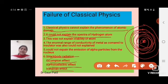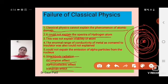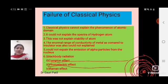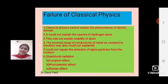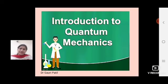All these are the failures of classical physics. Classical physics cannot explain the atomic domain, the spectra of the hydrogen atom, the stability of the atom, the range of conductivity between conductors and insulators, black body radiation, Compton effect, photoelectric effect, and Raman effect. To solve all these problems, a new branch of physics arose, which is called quantum mechanics.